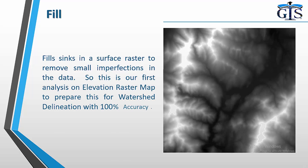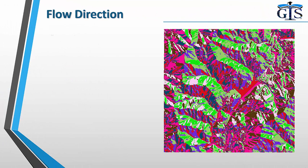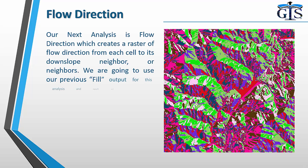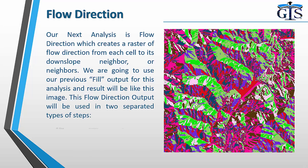The fill step fills sinks in a surface raster to remove small imperfections in the data. This is our first analysis on the elevation raster map to prepare it for watershed delineation with 100% accuracy. Our next analysis is flow direction, which creates a raster of flow direction from each cell to its downslope neighbor or neighbors. We use the previous fill output for this analysis and the result will look like the shown image. This flow direction output is then used in two separate steps: flow accumulation and identify basin.